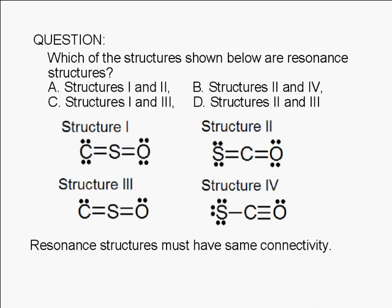Resonant structures refer to different ways of distributing electrons for atoms that are connected the same way. So the first thing we look for is a pair of structures where the atoms are connected the same way. For a triatomic molecule it's fairly simple.